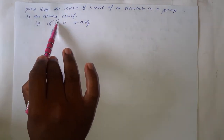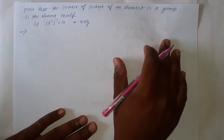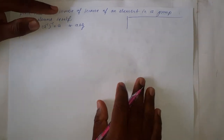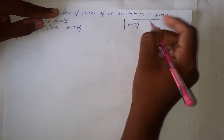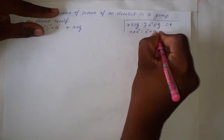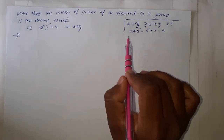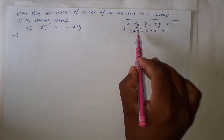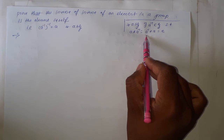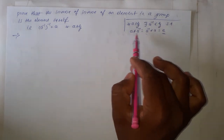The group G must satisfy the four laws: closure, associative, identity, and inverse. Then inverse of A inverse equals A. Before proving this theorem, let us discuss the statement of the inverse law. For all A belonging to G, there exists A inverse in G such that A star A inverse equals A inverse star A equals E. Independent of the position of A inverse, the result must equal the identity element E.